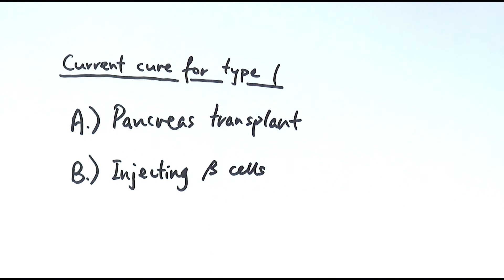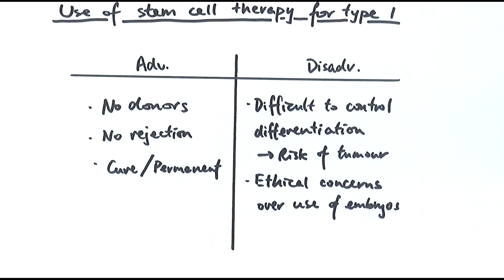The latest research is about the use of stem cells as a treatment or cure. The advantages are: there are no donors needed because we're using embryos which can be stored relatively easily; there are no rejection problems because the cells can come from the patient themselves or from early embryos before they have developed antigens; and it's a more permanent cure, meaning the patient no longer has diabetes. However, it is scientifically difficult to control differentiation — if something goes wrong there's a risk of developing a tumour, which can worsen to cancer. There are also major ethical concerns over using embryos, because extracting stem cells requires destroying the early embryo, potentially destroying a new life.